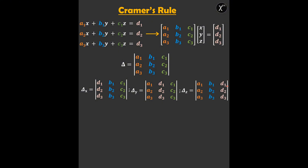Next is delta z, where the third column is replaced by the constants. Using these, we can solve for x = delta_x / delta, y = delta_y / delta, and similarly z = delta_z / delta.